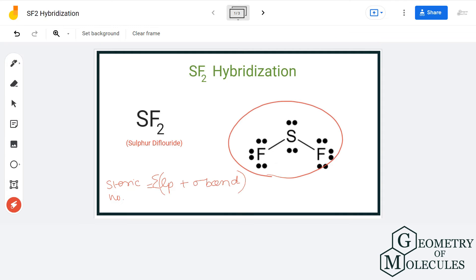Now let us have a look at the Lewis structure of SF2. We can clearly see that central atom sulfur has formed 2 sigma bonds with 2 fluorine atoms and has 2 lone pairs of electrons.